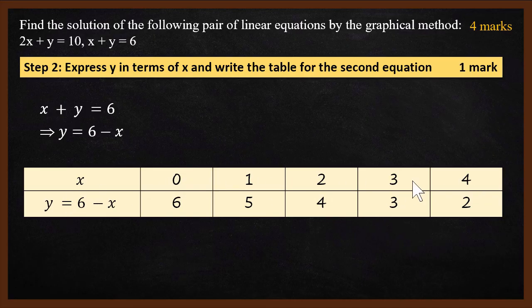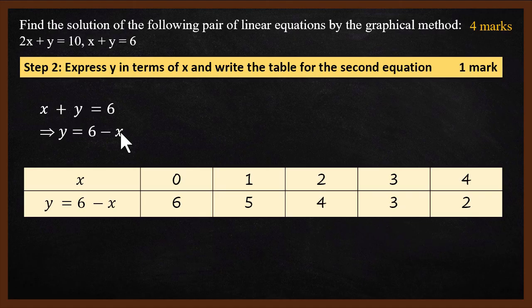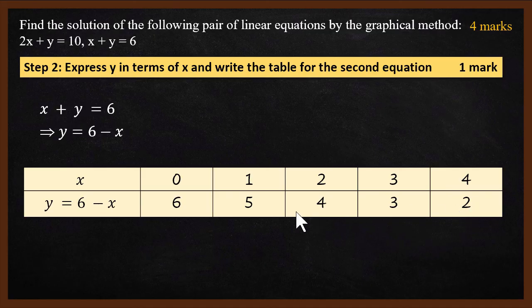We start with x equals 0: y is 6 minus 0, which is 6. When x is 1, y is 6 minus 1, which is 5. When x is 2, y is 6 minus 2, which is 4. If you write this table, you will get 1 mark.